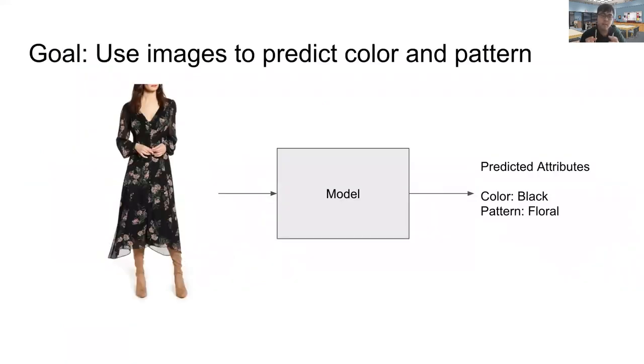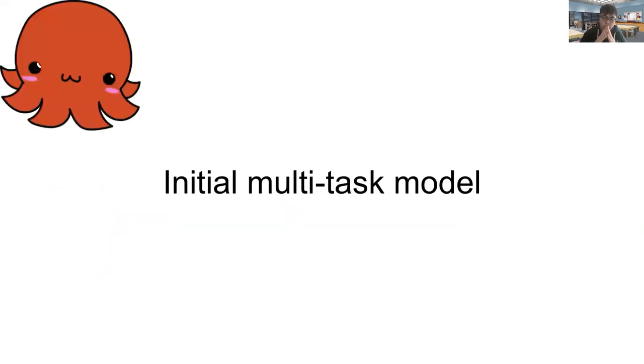So for this initial pipeline or section of the project, we recognize that we can represent products as both their images or their text. But for now, we just wanted to focus on images. While we recognize text is useful and we want to add it later, we basically take the image, screen it through a model, and be able to predict the color and pattern of that given product.